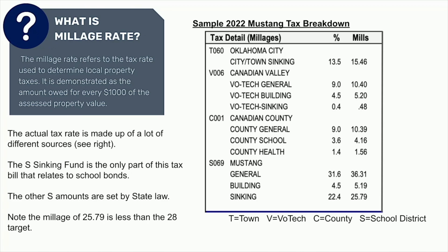If you slide down to Mustang, the general and the building numbers — the millage, 36.31 and 5.19 — those are dictated by the state. We have no control over what those millage rates are. The millage rates are the same for all districts; the dollar amounts are different depending on where you live. The dollar amount is different, but the millage, the tax rate, is set by the state.